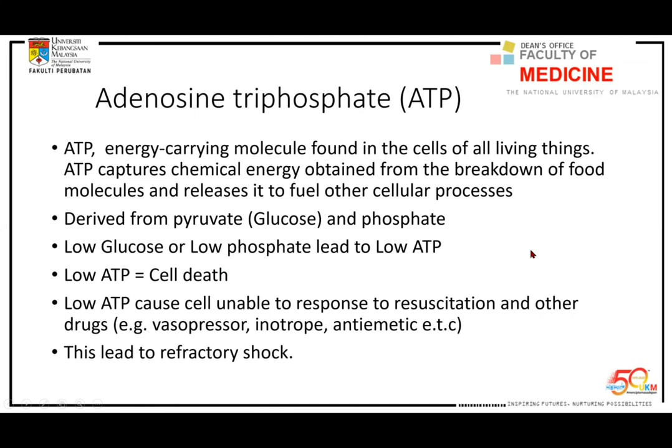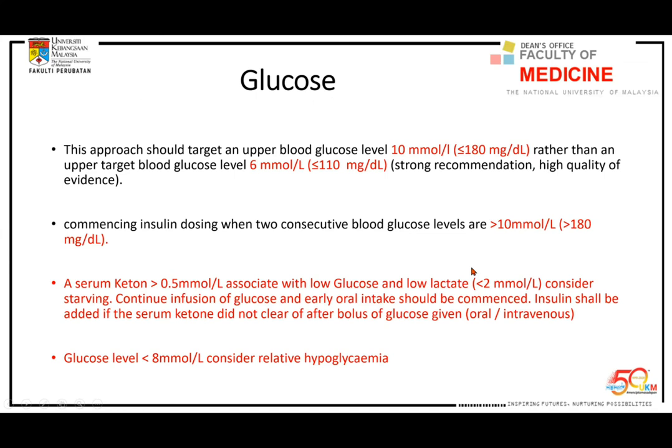How do we know if the patient's ATP is adequate? Look at whether the patient responds to resuscitation. If not, look at sugar — the target glucose for a sepsis patient is 8–10 mmol/L. For septic shock and sepsis, if glucose is less than 8 mmol/L, it is considered hypoglycemia. I repeat: less than 8 mmol/L is hypoglycemia for a septic or critically ill patient. If glucose is lower than 8, you need to give sugar. You can also do a serum ketone — if glucose is very low, ketone should be high, indicating cellular glucose stores are depleted.